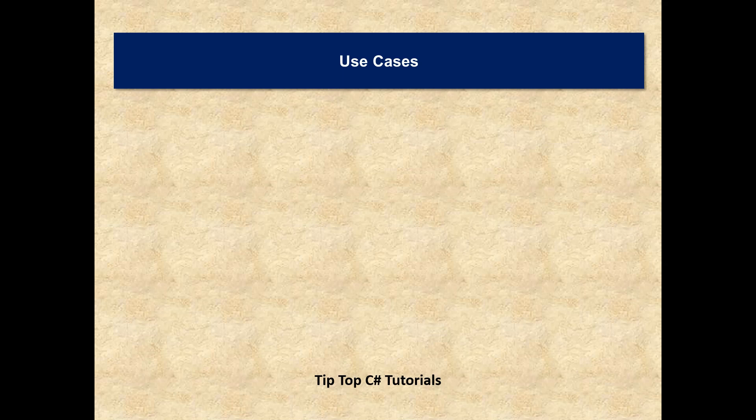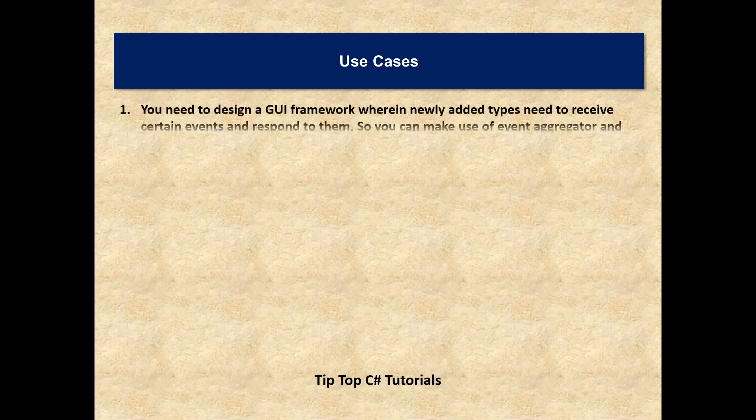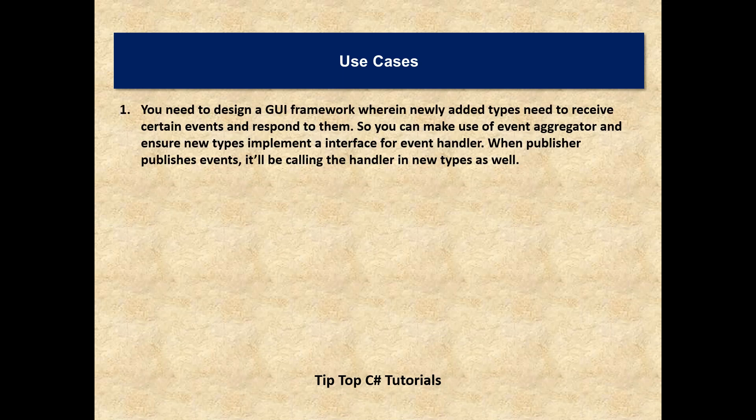Let's summarize the use cases. The first use case is designing a GUI-based framework where a newly added type needs to receive certain events and respond to them. If you have the Event Aggregator pattern already in place, you just add the new type, have it implement the interface for that event handler, and the Event Aggregator adds it to the publisher and event handlers list and calls the handler.